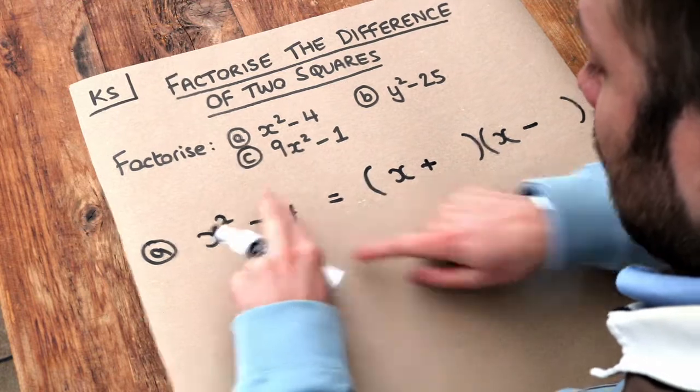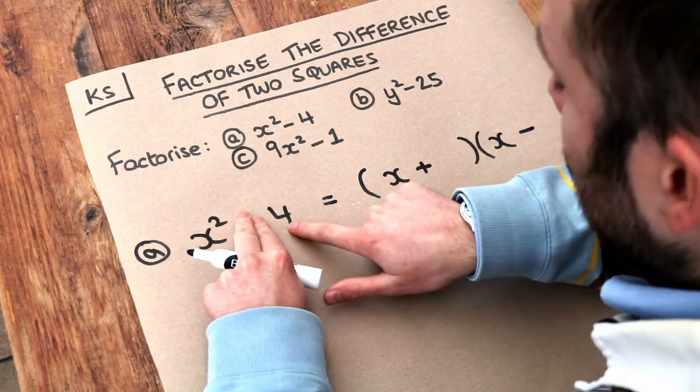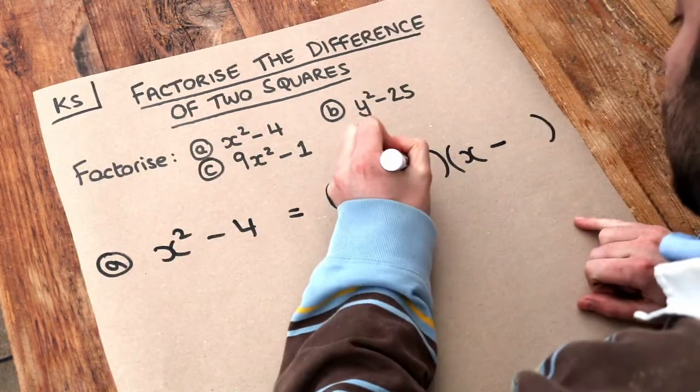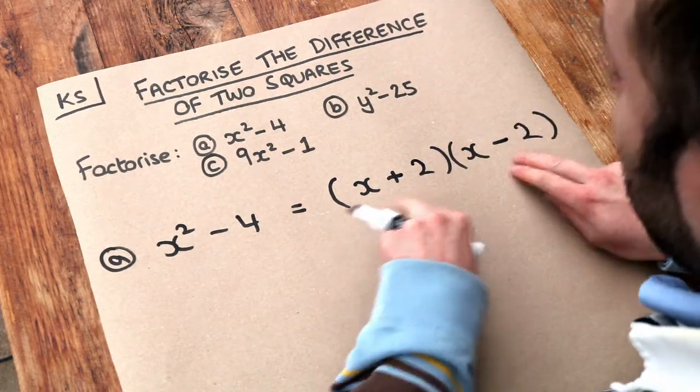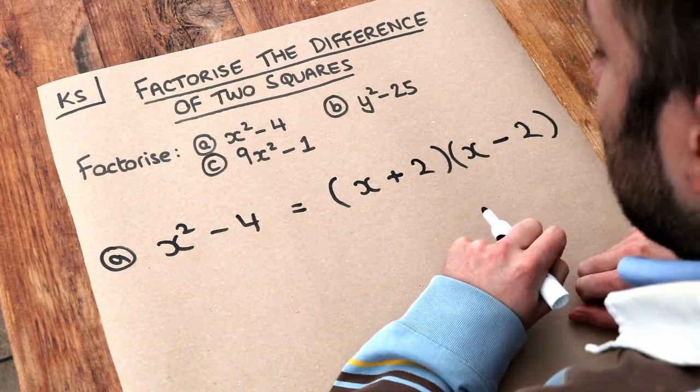And then what's the square root of the second thing? Ignoring the minus in the middle, what's the square root of 4? Well, it's 2. So you put 2 here and 2 here. If you were to expand these brackets, you would indeed get x squared minus 4.